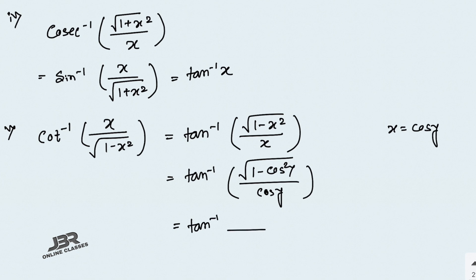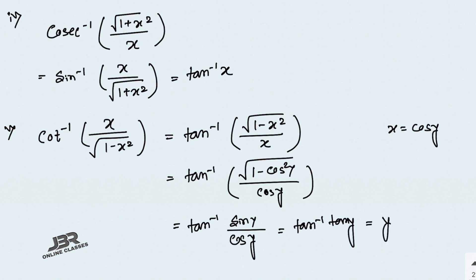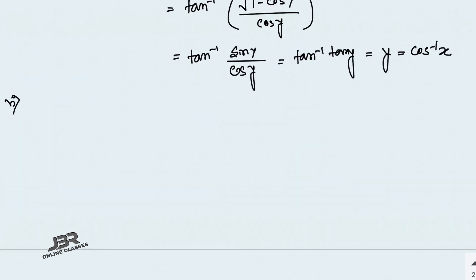Since 1 minus cos²y equals sin²y, the root gives sin y. So we have tan inverse of sin y over cos y, which is tan inverse of tan y, giving y. Since x equals cos y, y equals cos inverse x. That is your answer.